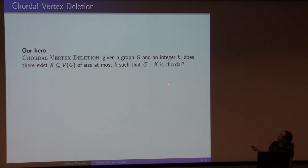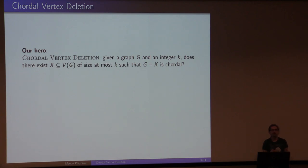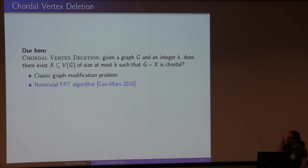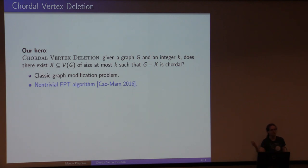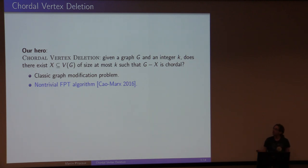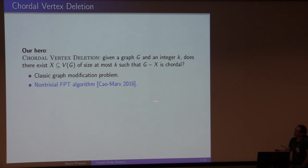Your goal is to delete k vertices so that the rest is chordal. This gives k as the natural parameter because you expect the number of errors or outliers to be small. It's non-trivial to get an algorithm here. For many graph modification problems, the forbidden subgraphs have constant size and simple branching works. But for chordal vertex deletion, holes can be arbitrarily large, so it's quite non-trivial to get even an FPT algorithm — this was done by Nixon and Daniel a few years back.